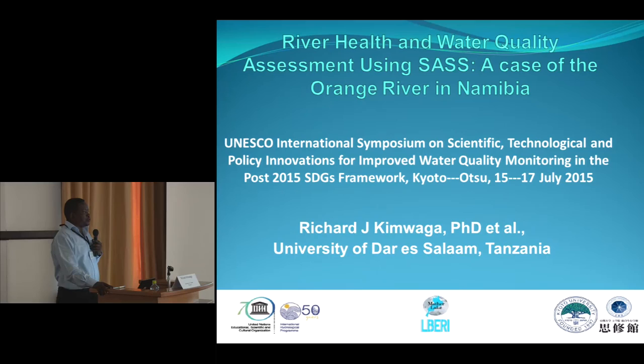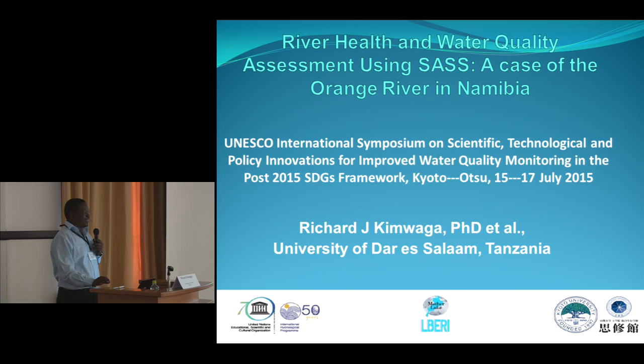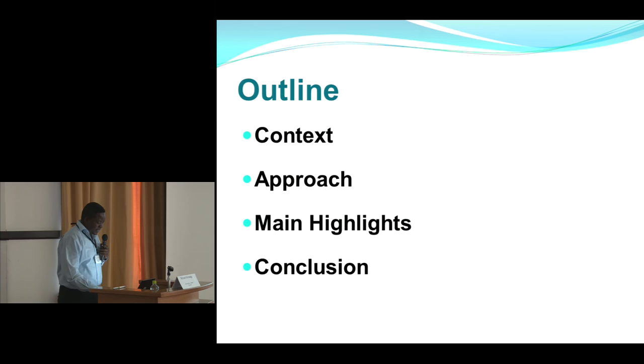What I'm going to talk about is to share the experience we had in terms of applying one method for assessing river health as well as the water quality situation in Orange River in Namibia. The key thing I'd like to draw your attention to is SAS — the South African Scoring System — which is basically a system for assessing river health through a scoring approach.